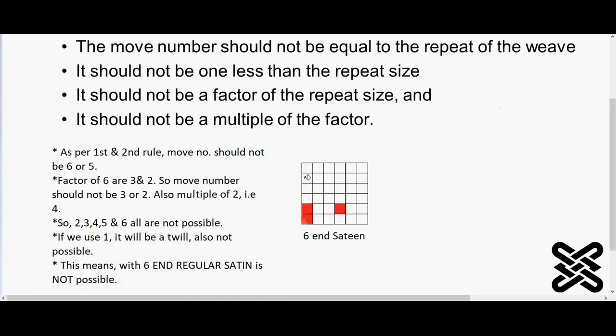Two intersections have come, so that means it is not correct. That's why I told you, with the 6 end you cannot make a regular satin. Similar other things are there; in future you can see it. I hope it is clear to you. Thank you.